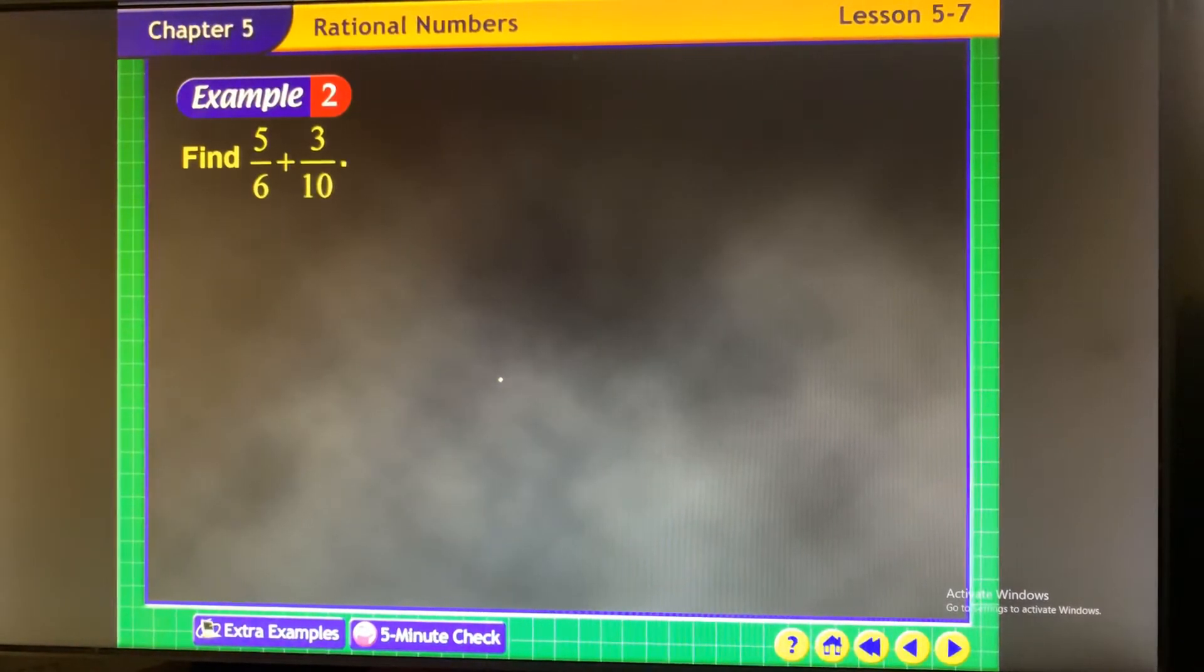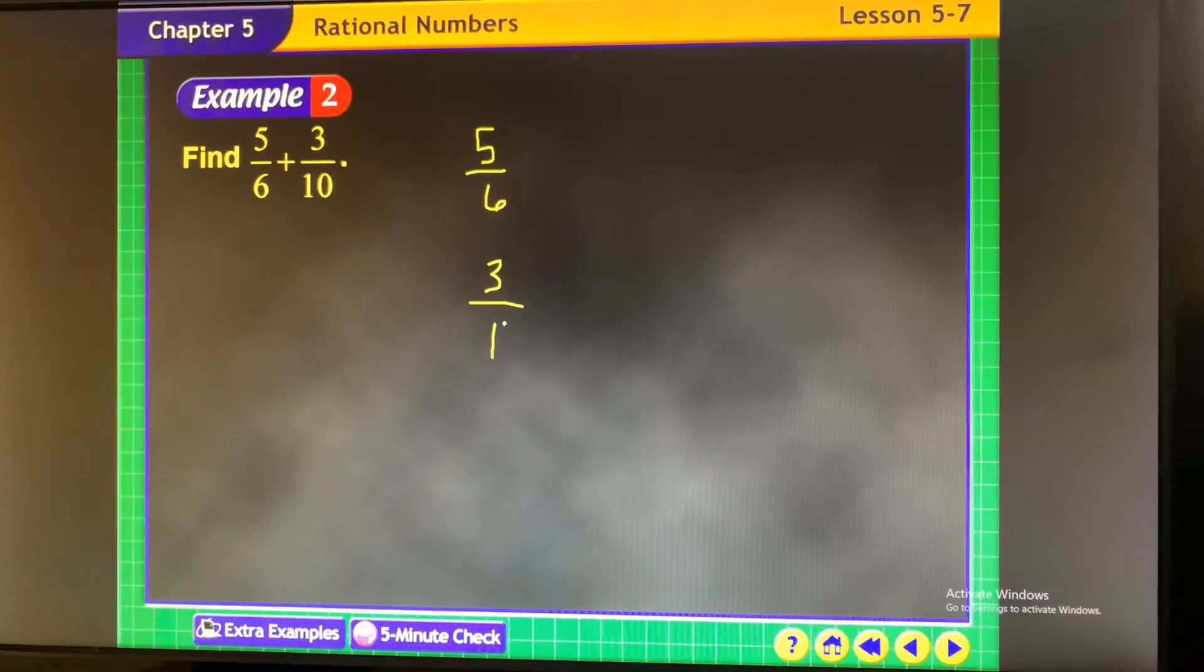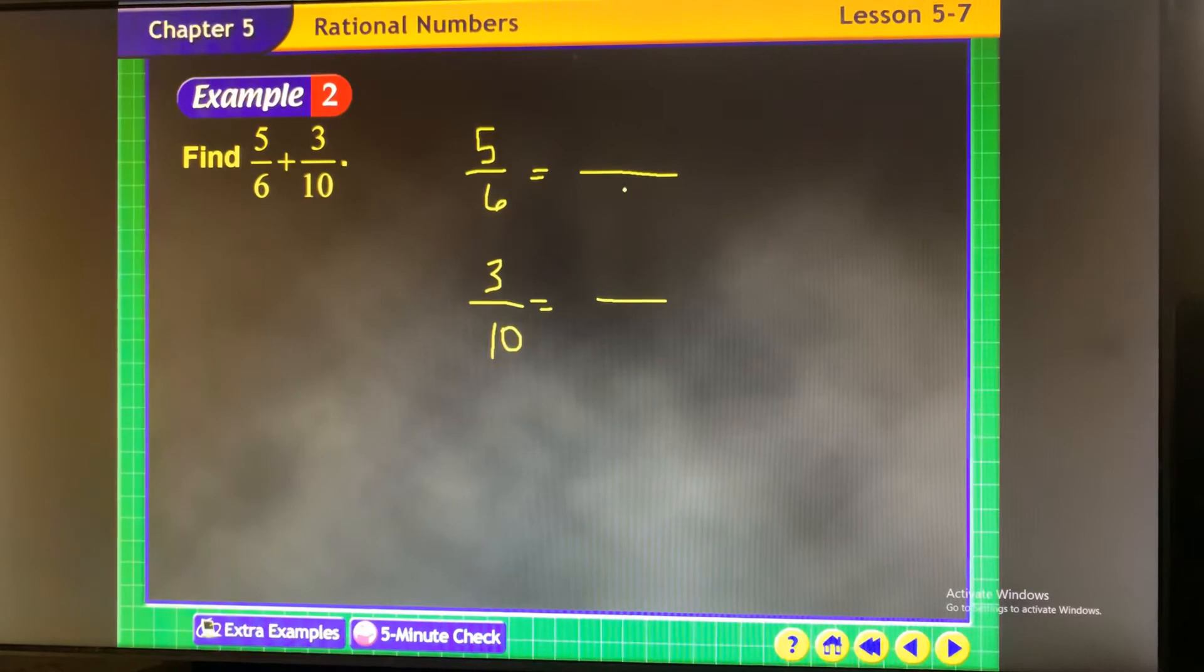Same thing. Go ahead and you try it. The common denominator, the least common denominator is not 60. So please don't put 60. So if I have 5 sixths and 3 tenths and I put 60, that's fine, but it's not going to be simplified in its lowest terms and you'll have to do some work. That's fine, but why wouldn't you just work on finding the LCD of that,